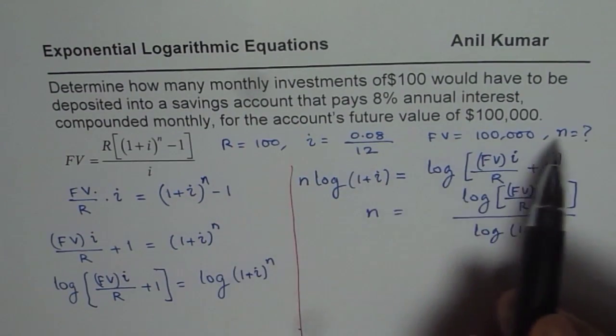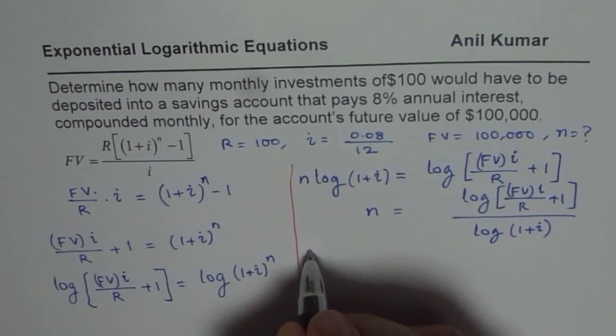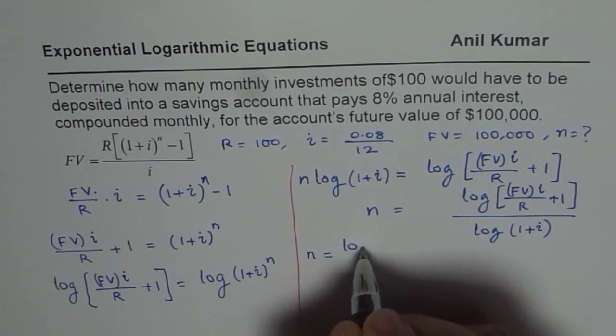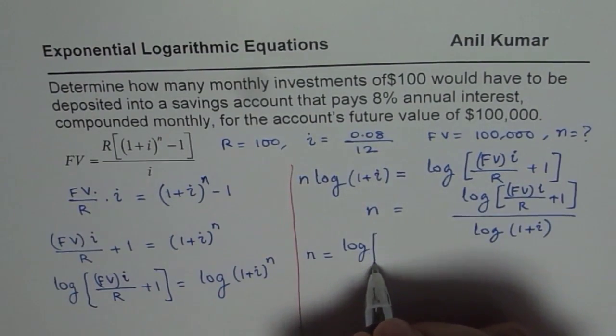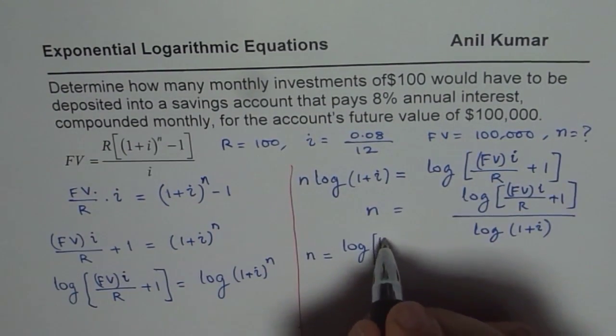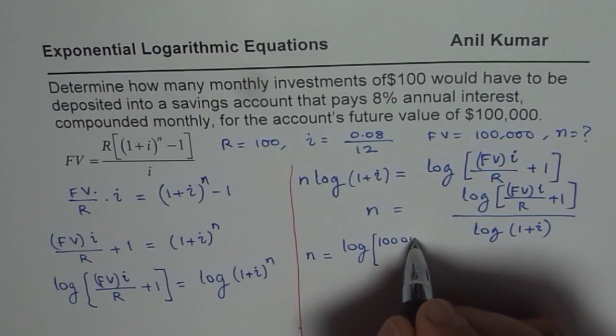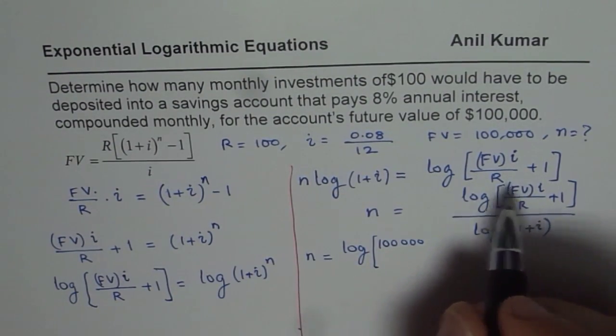Let me substitute these values and calculate. N equals log of future value, which is 100,000.